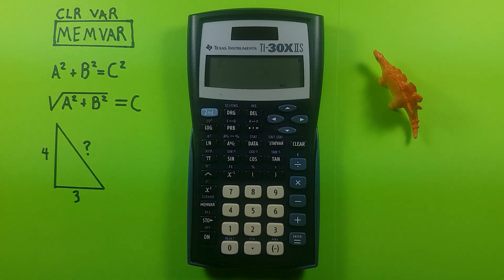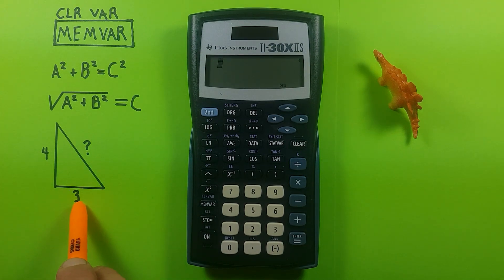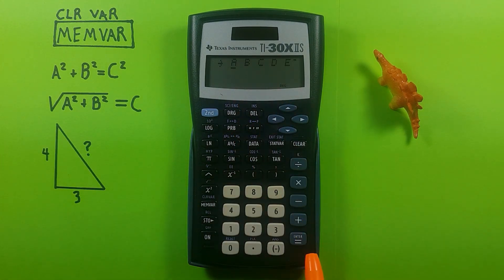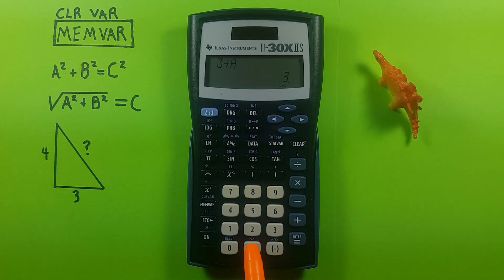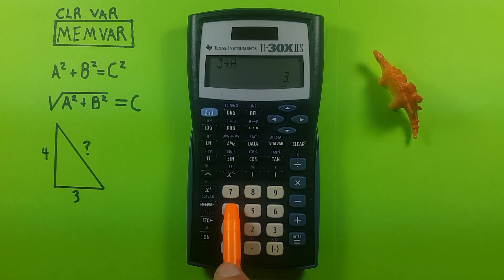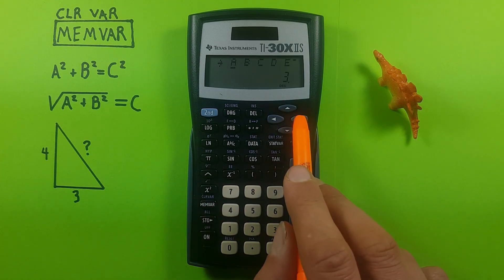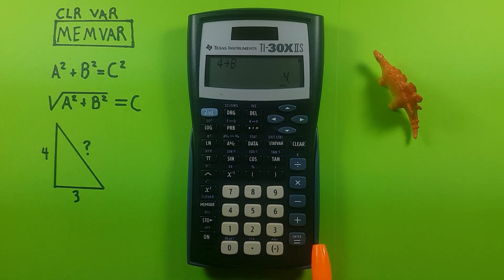So to get started, we'll save 3 as the A side — store, A, enter. And 4 as the B side — 4, store, B. All right, we've got our data entered. Now we just need to recall it for the formula.